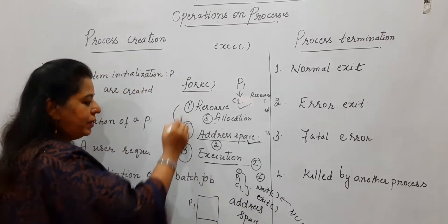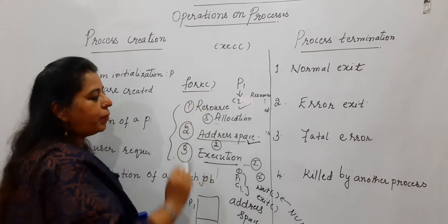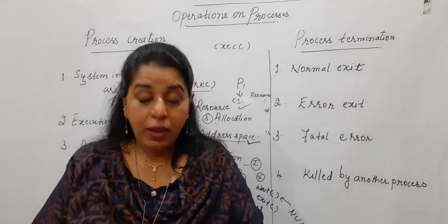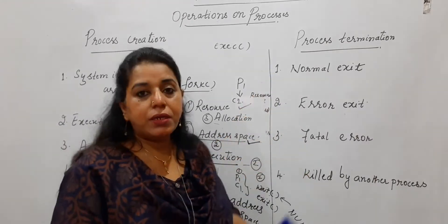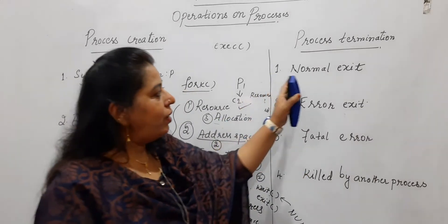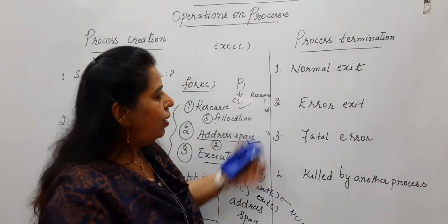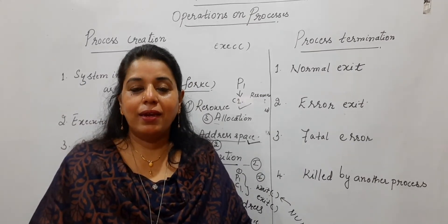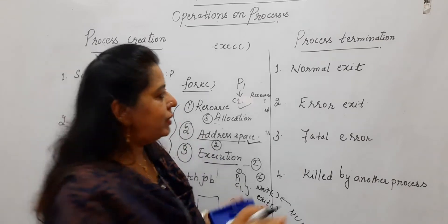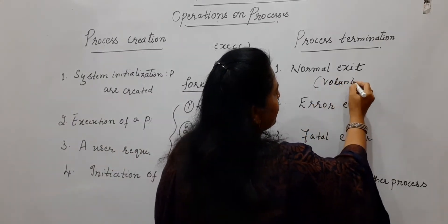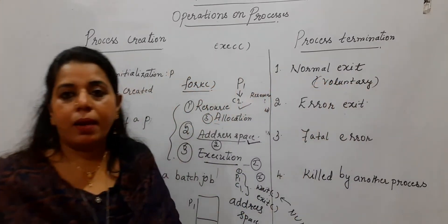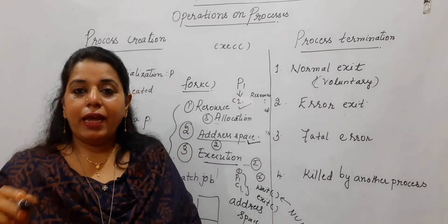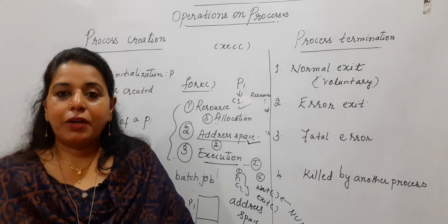Now for process termination: under which situations does it happen? The first type is normal exit — when a process completes its task, it makes an exit and gets terminated. This is also called a voluntary exit. The second type is error exit — if there is an error in the program, such as referencing a file that does not exist in the directory, the process exits. This is also voluntary because the system has not interfered.